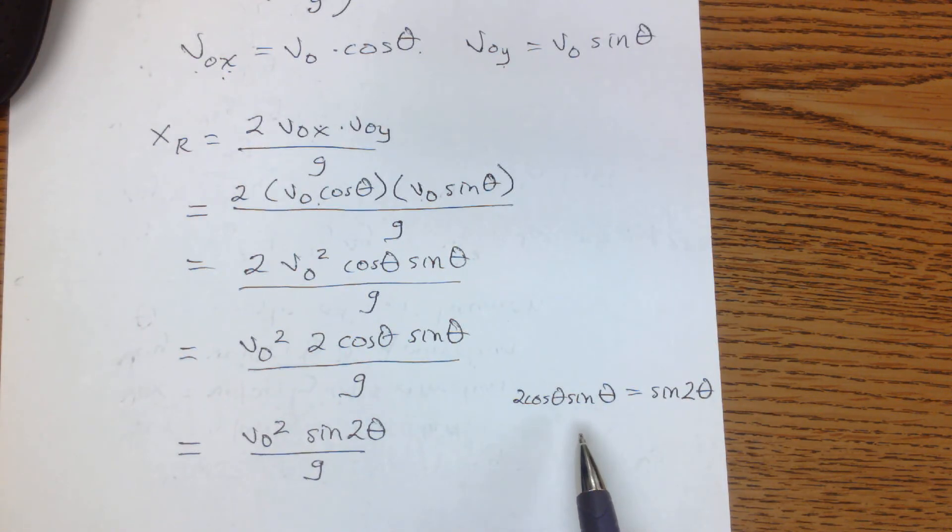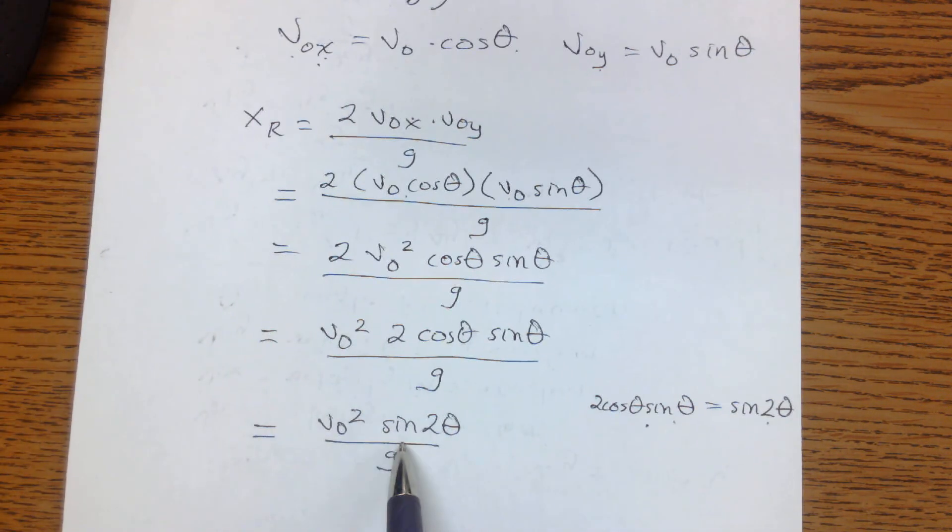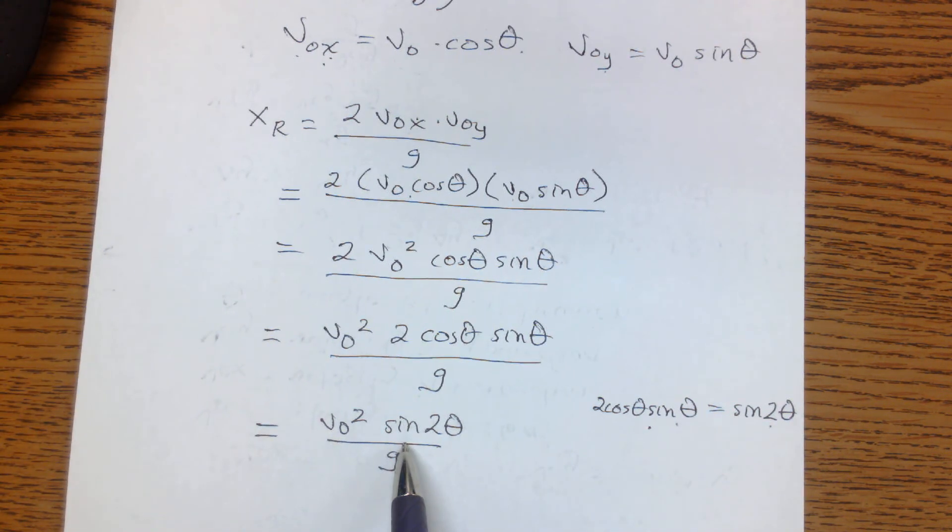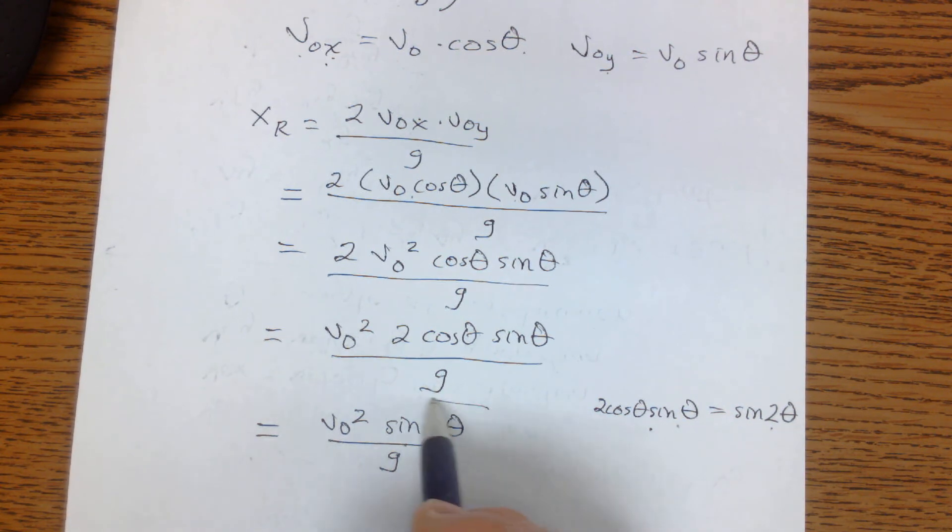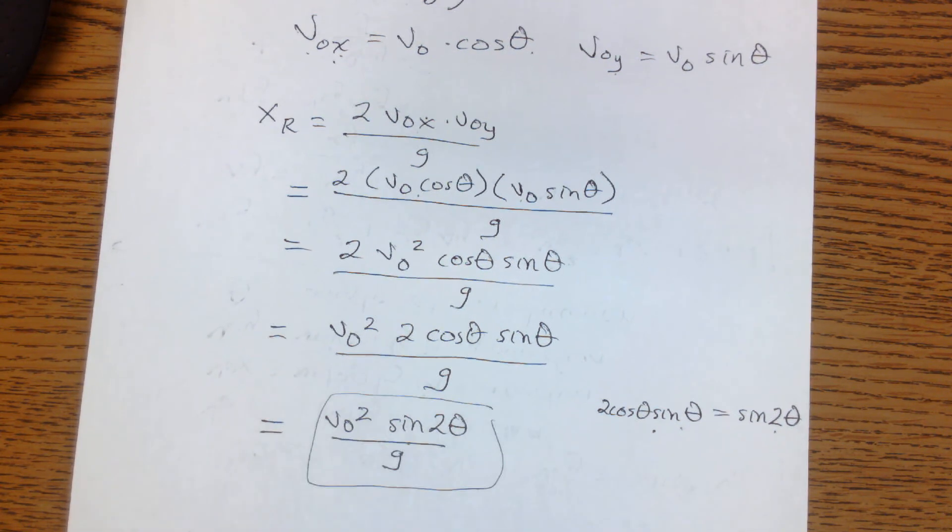So if you've had a trig class and you remember that 2 cosine theta sine theta is equal to sine of 2 theta, you can just substitute this in and then you've actually got a pretty handy formula that you derived from all of the equations that you've done previously.